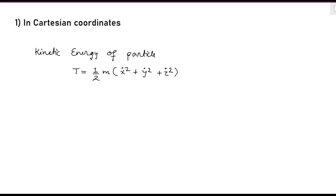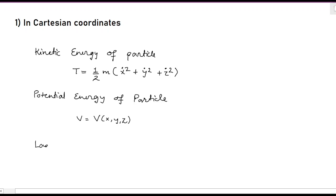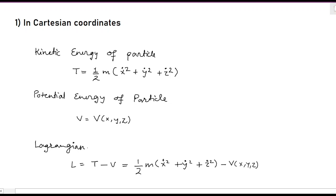The second thing we need is the potential energy of the particle. In Cartesian coordinates, V will be a function of x, y, z. From these two quantities, we can write the Lagrangian. The Lagrangian L equals T minus V, which is kinetic energy minus potential energy. Substituting the values: L = (1/2)m(x-dot² + y-dot² + z-dot²) minus V(x, y, z). This is the Lagrangian.